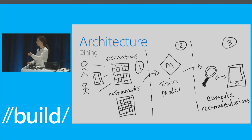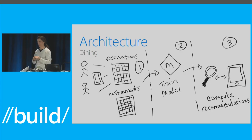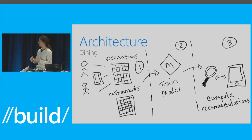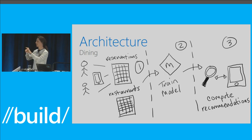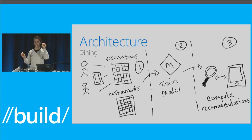A recommendation like 'what are the other restaurants people liked alongside this one' can be computed offline, cached, and then served when users pull restaurant information. The interesting thing is you can combine it with search very naturally — you're searching for something, and in this context we're using Azure Search. Once you find a few items you like, you see what other items you'd like if you liked that one, even with no keywords in common between what you searched and the recommended place.